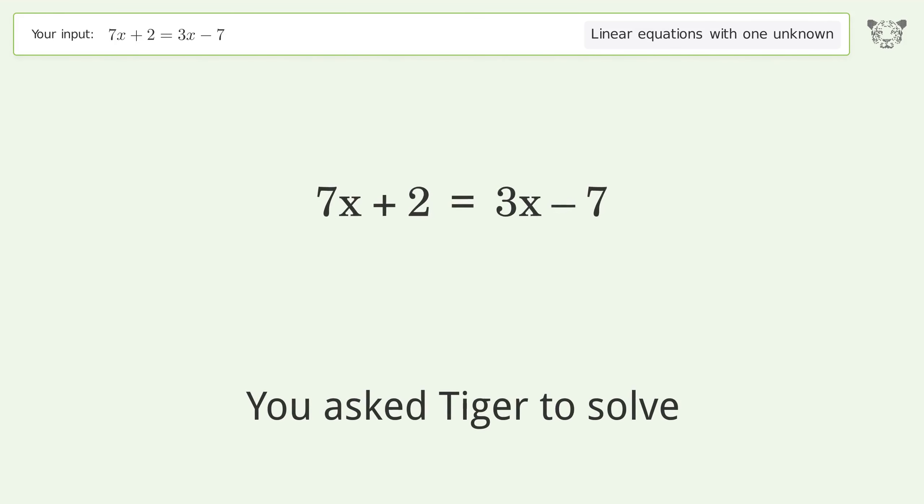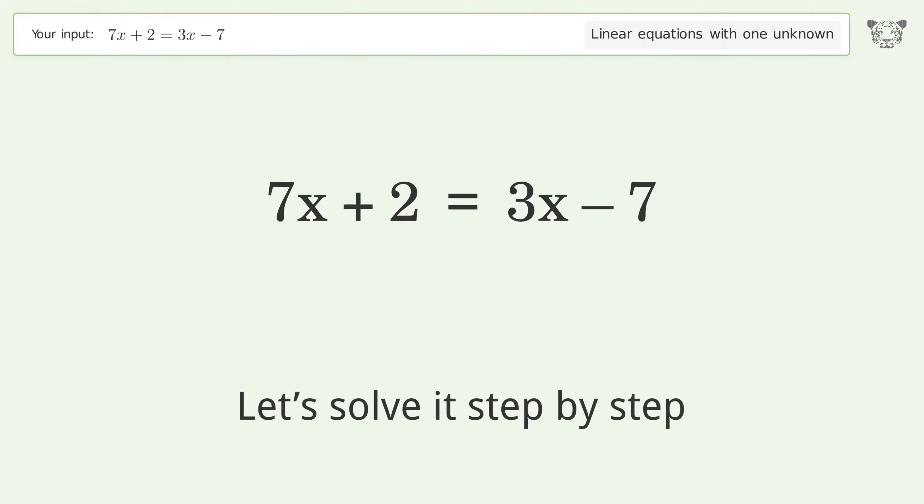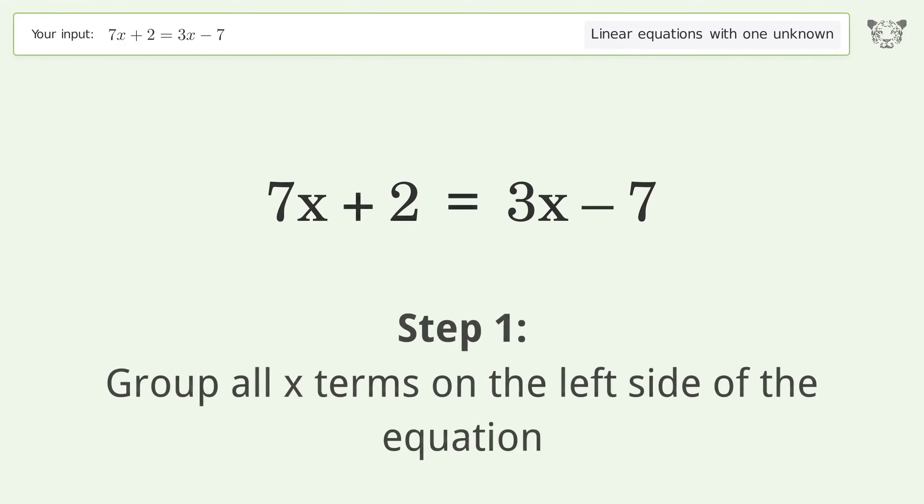You asked Tiger to solve this. It deals with linear equations with one unknown. The final result is x equals negative 9 over 4. Let's solve it step by step. Group all x terms on the left side of the equation.